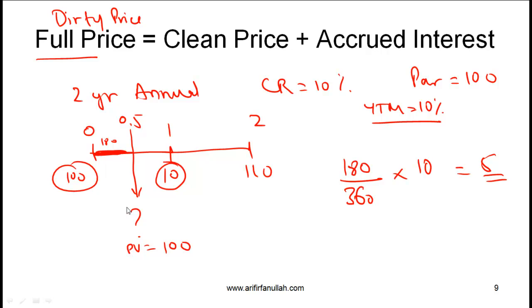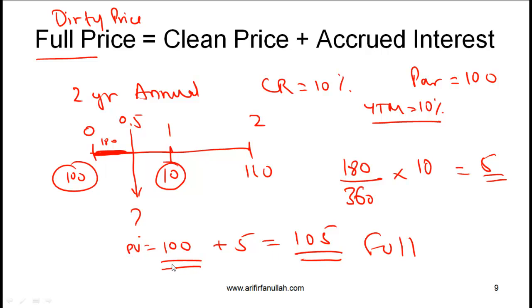So you should sell the bond to me for 100 plus 5, which equals 105. That 105 is called the full price or dirty price. The clean price — the price at which a bond is normally quoted — is simply the present value of the future cash flows, so 100 is the clean price and 5 is the accrued interest. When a bond is sold it is sold at the full price, so no further transaction needs to take place when the coupon payment is made.